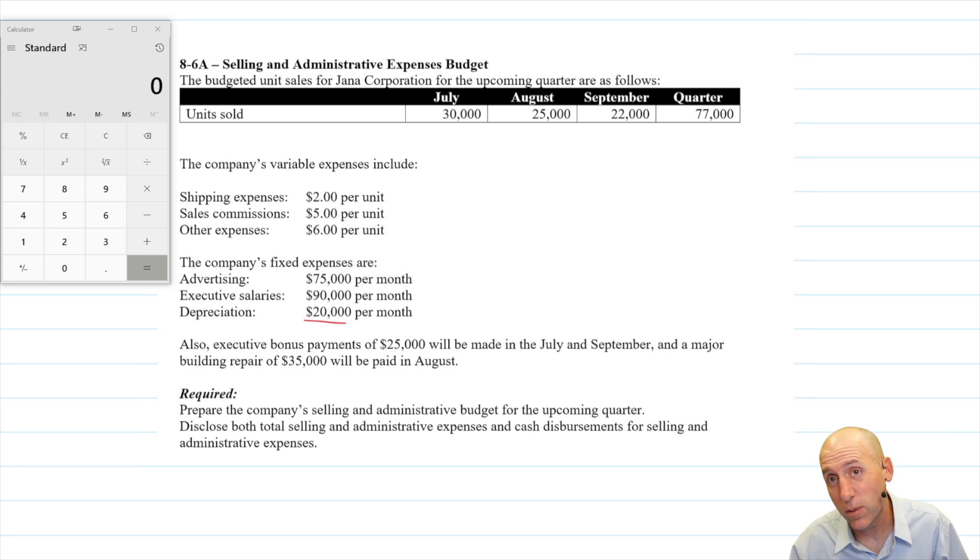If you watch the previous video on an overhead budget, you'll know depreciation is kind of special. We're going to include it in our total expenses, but we're going to take it out at the end because it doesn't involve cash, and we're often interested in knowing what our total expenses are and our cash disbursements are. It says also executive bonus payments of $25,000 will be made in July and September, and a major building repair of $35,000 will be paid in August. Okay, so we have our marching orders. Let's get to it.